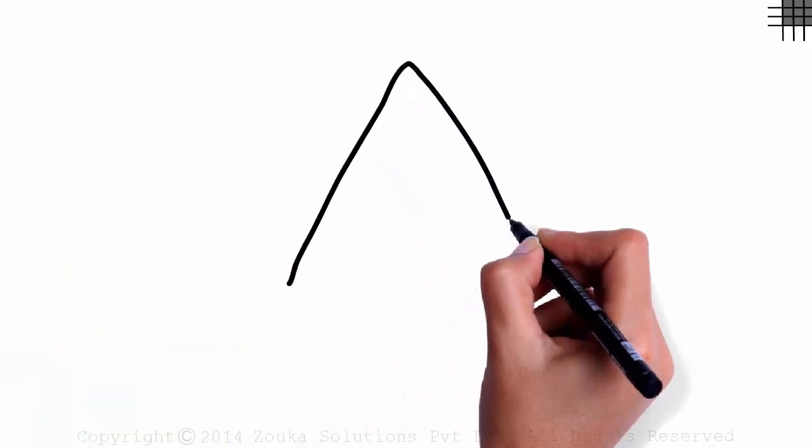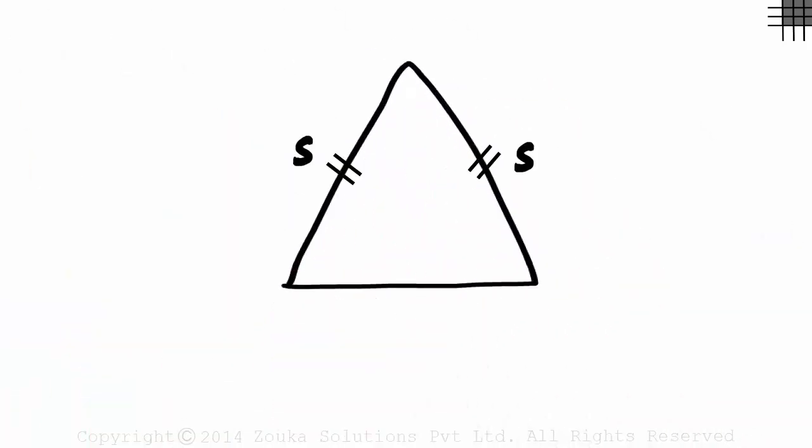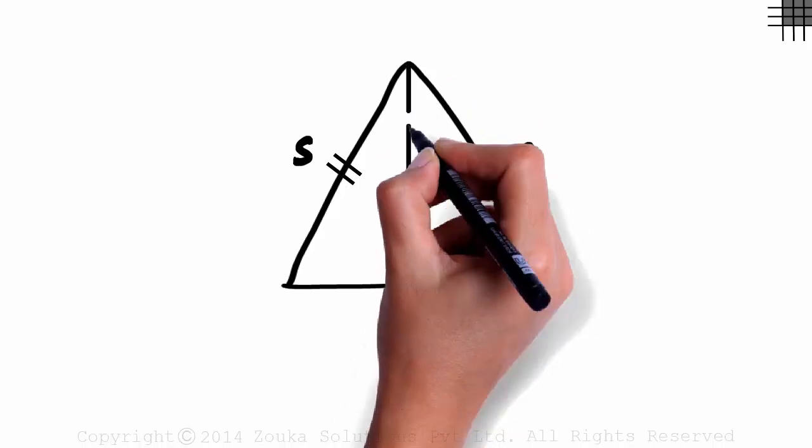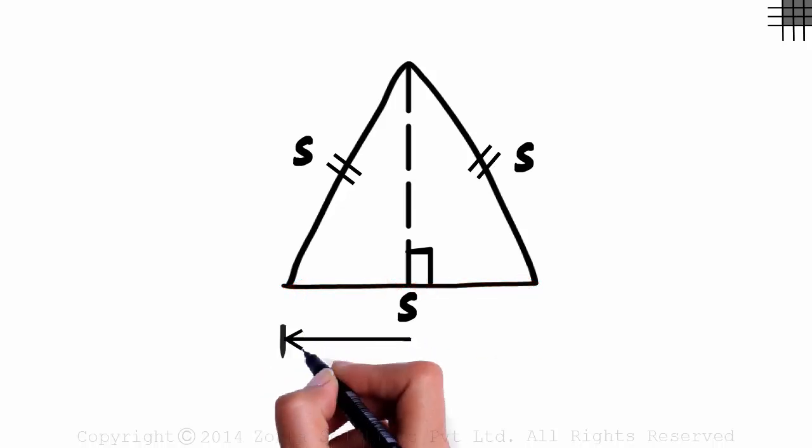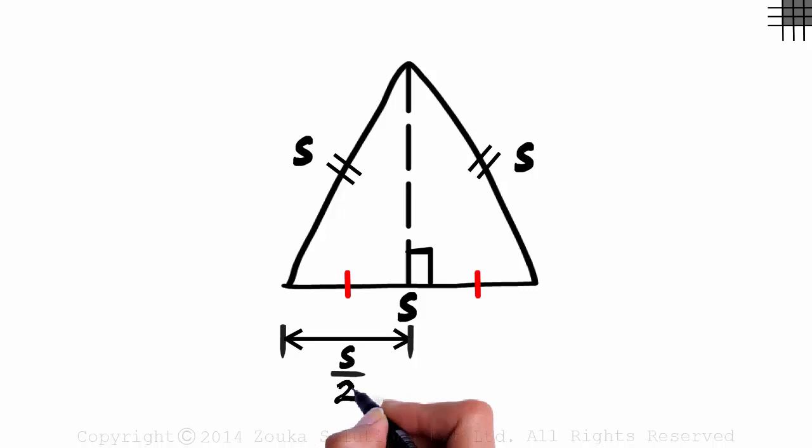Look at this equilateral triangle with sides S. If we drop a perpendicular from a vertex onto its opposite side, it will divide it into two equal parts. This length will be s by 2 and this length as well will be s by 2.